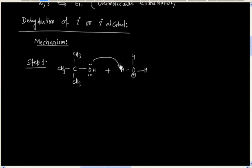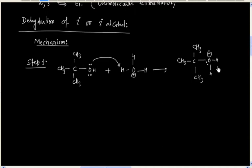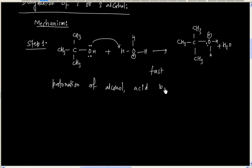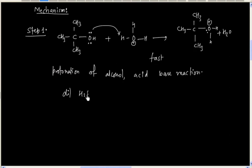The first step is an acid-base reaction — that is protonation of the alcohol. This is a faster step, because acid-base reactions are always fast. If dilute H2SO4 is used, H3O+ acts as the acid.